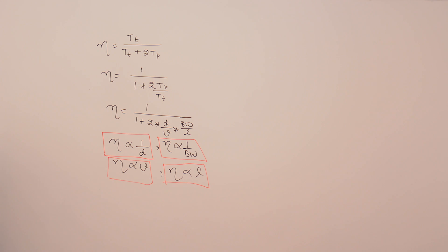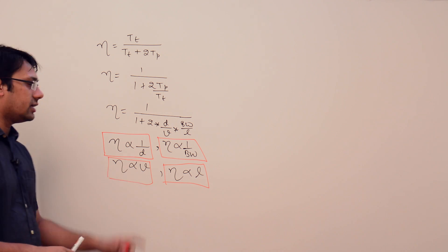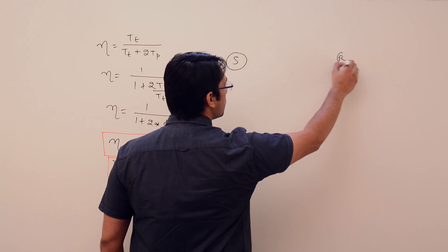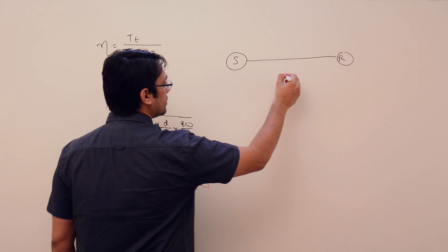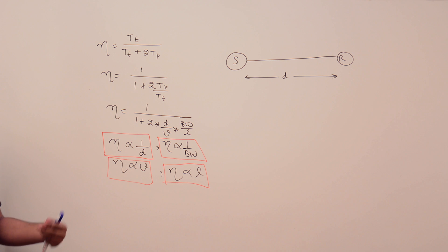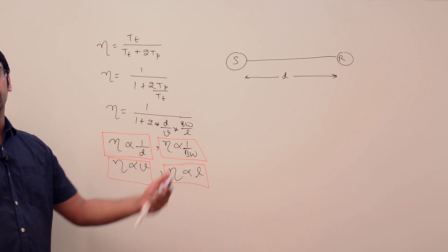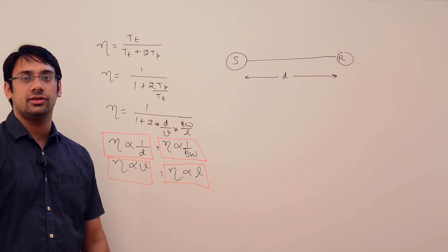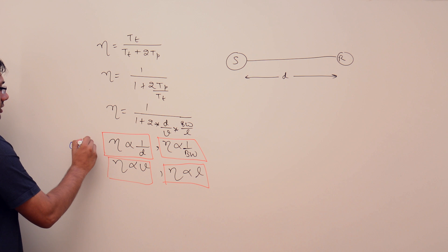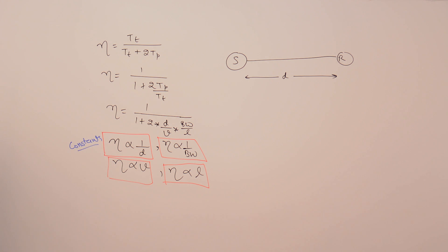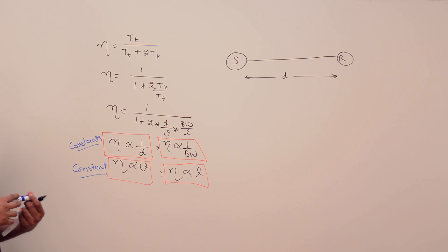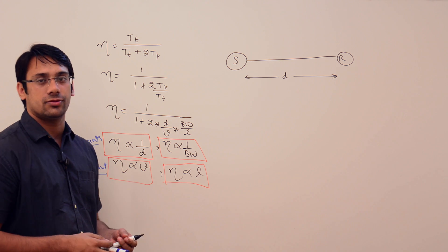Let us discuss all these relations one by one. The first relation is distance. Assuming we have a sender and a receiver separated by some distance D. The distance is generally constant — for example, if you are in India communicating with a user in San Francisco, the distance does not change. Similarly, the velocity of the signal is constant; for instance, in optical fiber, the signal travels at about 70% of the speed of light.